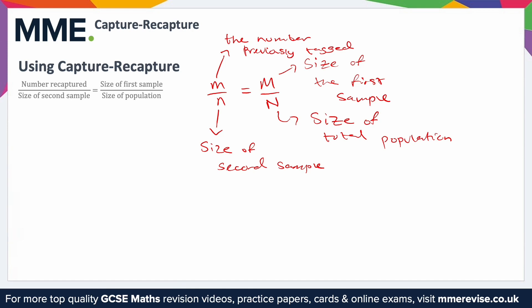For example, if we wanted to rearrange this — we'll use the simplified form just because it's going to be a little bit quicker to write — if we wanted to rearrange this to get the size of population, which is uppercase N, we could flip both sides. That gives us n over m is equal to capital N over capital M. Then we want N on its own, so multiply through by capital M. That leaves us with N equals n over m times capital M. So the size of the second sample over the number recaptured times the size of the first sample gives you the size of the population. You can rearrange this for different variables however you like — whatever the question asks, rearrange for it or substitute in and then solve.